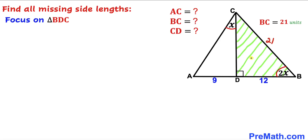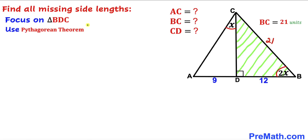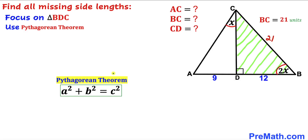Now let's focus on right triangle BDC again. We know two of its side lengths and we are going to find the altitude CD using the Pythagorean theorem: A squared plus B squared equals C squared. We'll call the longest leg side C, and label the other sides A and B, and calculate side B which corresponds to CD.